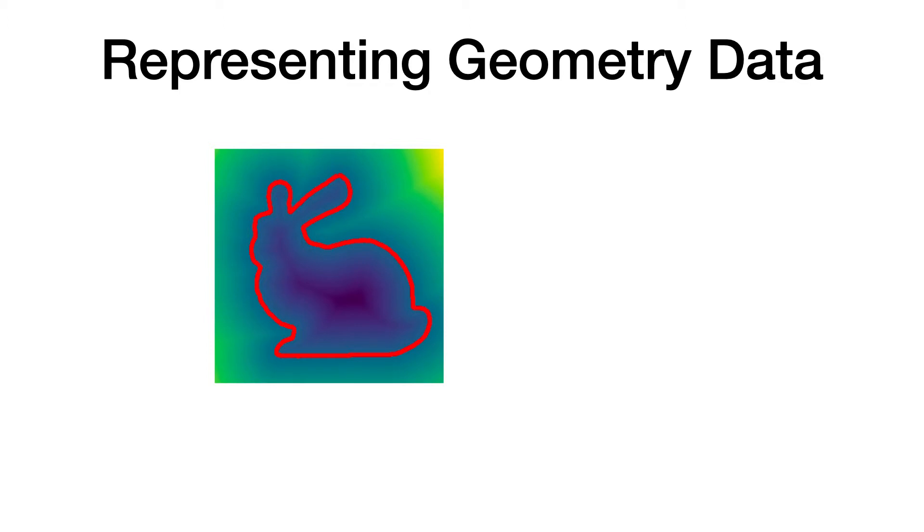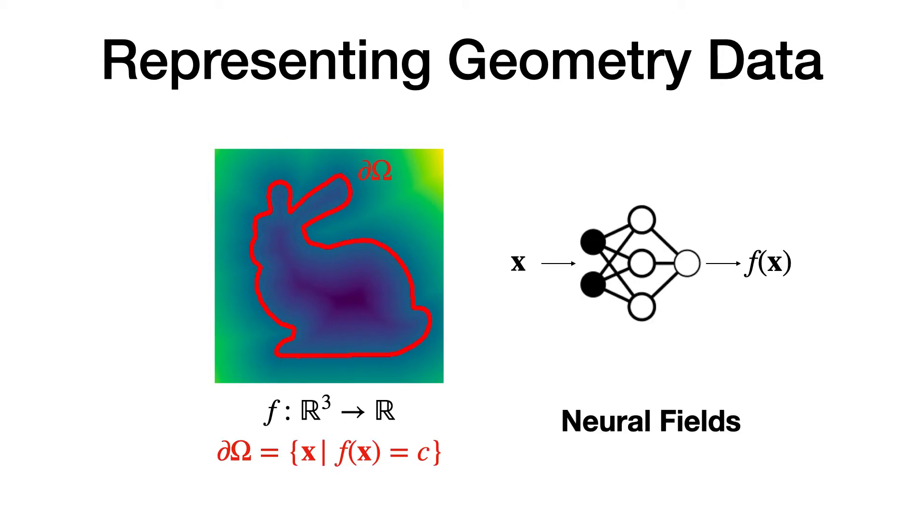One alternative is implicit fields. Implicit field is a function that maps a spatial coordinate to a scalar. Shape is defined as a level set of such field function. Recent work trained neural networks to approximate the value of the field function, leading to a class of representation we call neural fields.